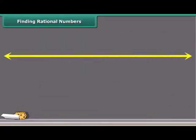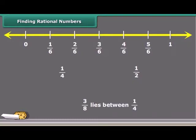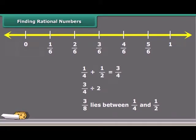There are infinitely many rational numbers between any two rational numbers. Using the mean method, we can find a rational number between two given rational numbers. For example, 3 by 8 lies between 1 by 4 and 1 by 2. Find the sum of the two numbers, which comes out to be 3 by 4, then divide this sum by 2.